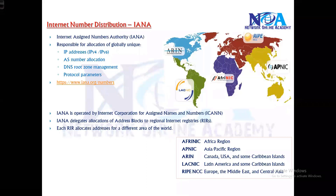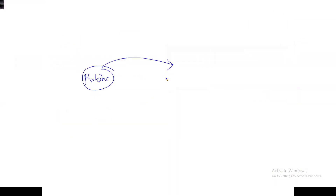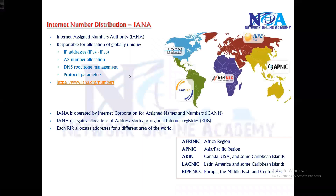The next thing we'll talk about is something called number distribution. If you need to get a public IP, you will be getting it from a service portal, and the service portal gets it from IANA. So what exactly is IANA? IANA stands for Internet Assigned Numbers Authority. It's a non-profit American corporation that oversees the allocation of IP addresses.